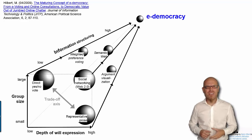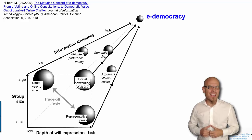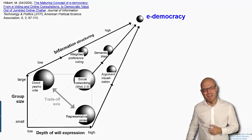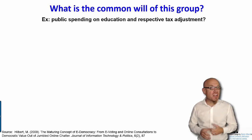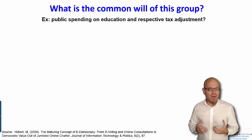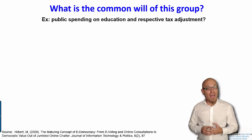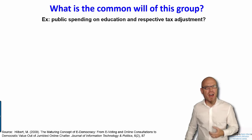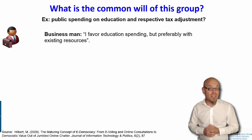How can we think about that? Let's look at a very simple example of how digital intermediation can help us to realize democracy to a bigger extent. Let's imagine we have a discussion about public spending on education and respective tax adjustments. Imagine we have five people in our society.